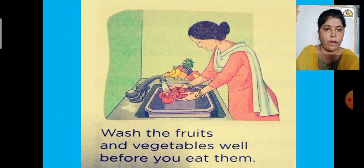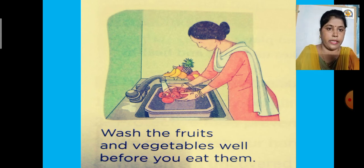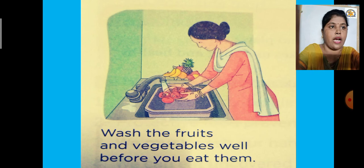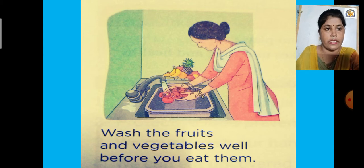The first good food habit is: wash fruits and vegetables well before you eat them. Whenever someone gives you fruits like an apple, you must wash them properly. Your mother also washes vegetables before cooking. After watching this video, you can go and ask your mother — she will confirm that she washes all fruits and vegetables too.